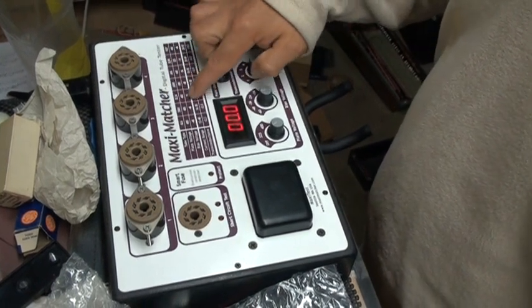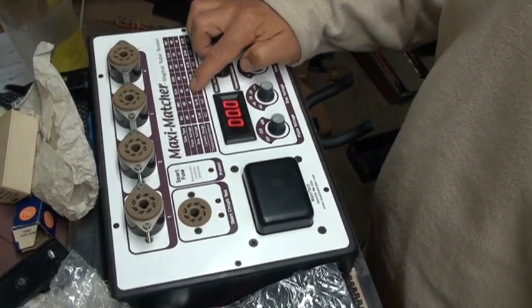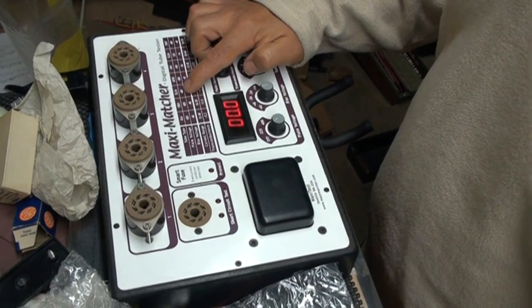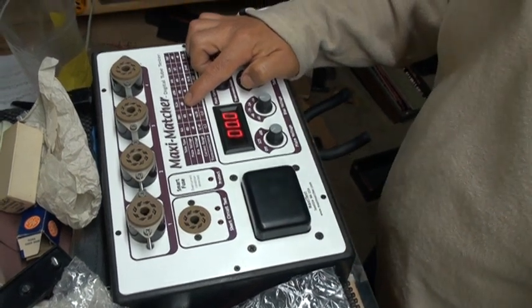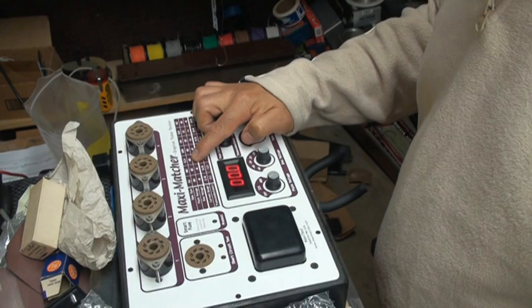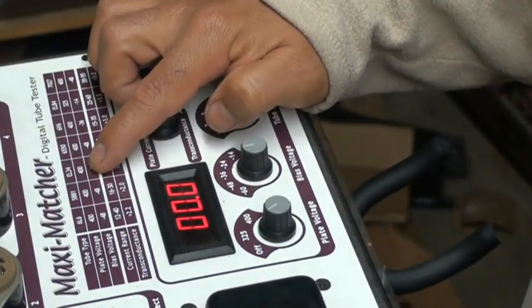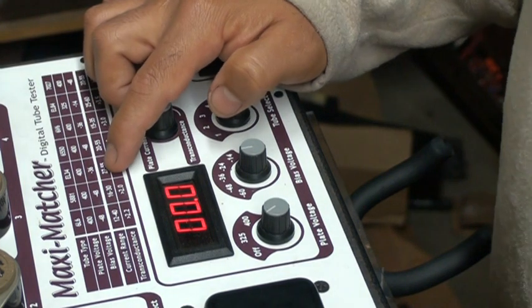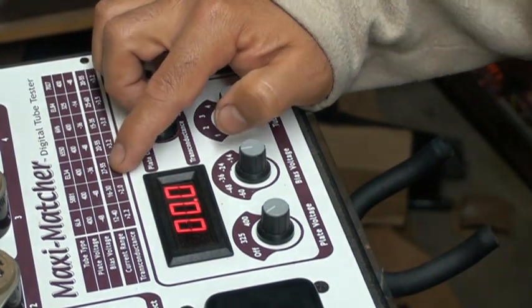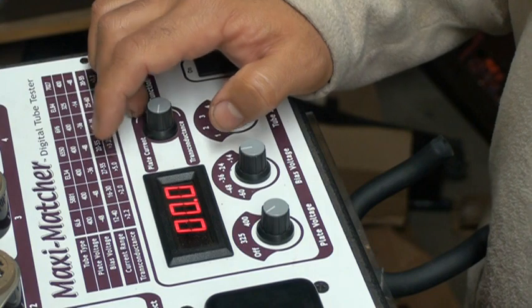Back to EL34s: the bias voltage is minus 36 and this tube test tests at 400 volts. Going down, the current range is between 27 IP and 55 IP, and the transconductance here says greater than 5.0, which is really 5,000 - greater than 5,000.